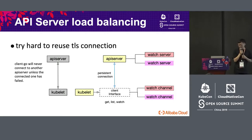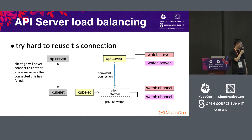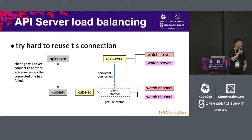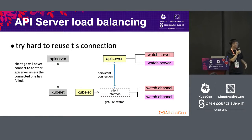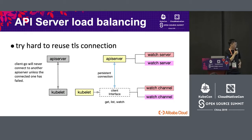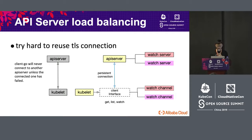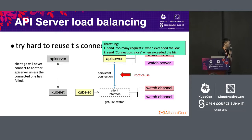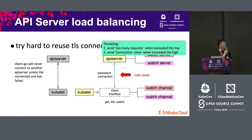The reason this problem happens is actually very simple: Kubernetes made a lot of efforts using HTTP/2 to communicate, and in order to reduce connection overhead, it uses persistent connections. So when Kubernetes and the API server have established a connection, the connection will always be there and will not be broken. Now that we know this problem, solving it is also very simple. Firstly, we know that the client is not trustworthy, so we need a protection mechanism — there are two ways.